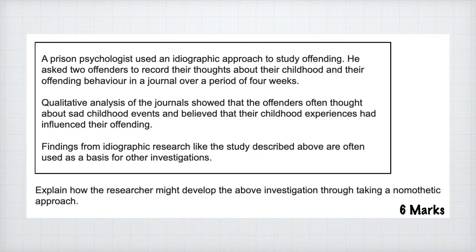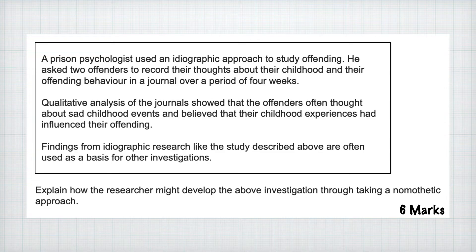We're going to start with the 6 marker. It's an application question in which a researcher has been doing an ideographic piece of research with offenders, and now the question is asking you how this could be developed by taking a nomothetic approach. It's a little bit wordy and tricky, but what this question wants from you is to say what the differences are between the nomothetic and the ideographic approach in terms of how they approach conducting research. So you're going to want to think about things like the use of large samples in a nomothetic approach, the use of quantitative methods, data analysis, anything that allows for a scientific approach to creating general laws. And obviously because it's an application question you have to frame it around the study that the researcher is already doing with offenders.